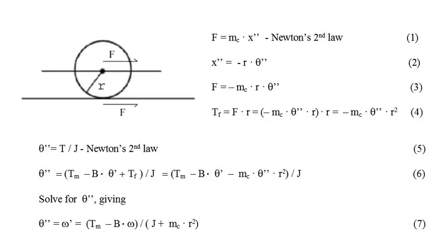From Newton's second law of rotational motion, equation five states that theta double prime equals the total torque applied to the rotor divided by the rotor's moment of inertia J. The total torque on the rotor is the motor torque T_M, the damping torque minus B times omega, and the floor torque T_f. Dividing by J gives equation six, which can be solved for theta double prime, giving equation seven. That is our differential equation for the second state variable, omega.